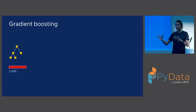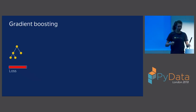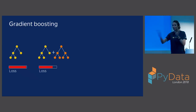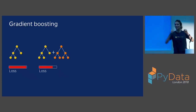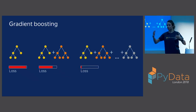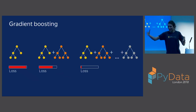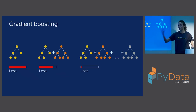How does gradient boosting work? It is an iterative algorithm usually based on decision trees. You first build one decision tree, then you build another decision tree to reduce the error. You do this for hundreds, thousands, or tens of thousands of times. In the end you have a very complicated model that can find complicated patterns in your data.